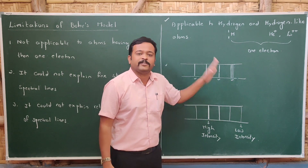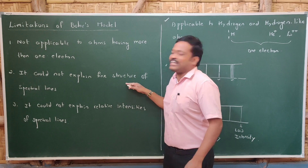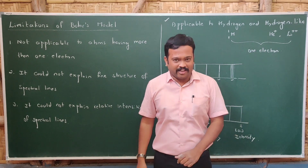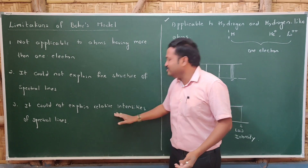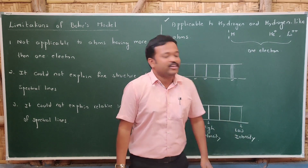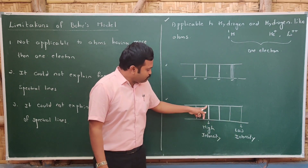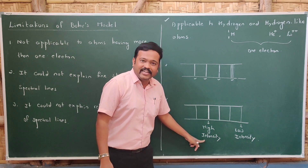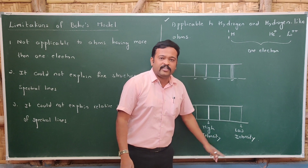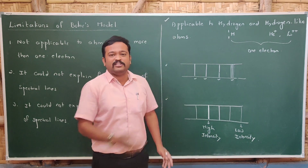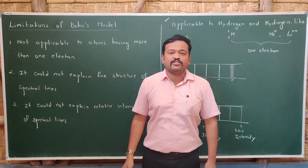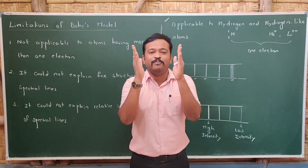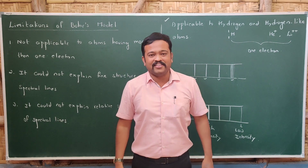Fine structure refers to the additional lines seen beside the main spectral lines, and Bohr's model could not explain why those lines appear. Furthermore, Bohr's model could not explain the relative intensities of spectral lines — in a spectrum, some lines are brighter (higher intensity) and some are lighter (lower intensity), and Bohr's model provides no answer for these relative intensities. These are the key drawbacks of Bohr's model.